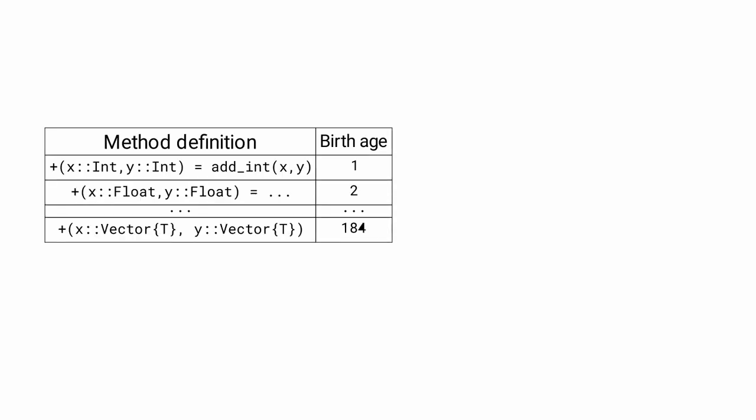Optimizing function calls is critical for the performance of Julia. Because Julia is a language with multiple dispatch, there can be hundreds of methods for the same function. For example, there are 184 versions of addition in the standard library.